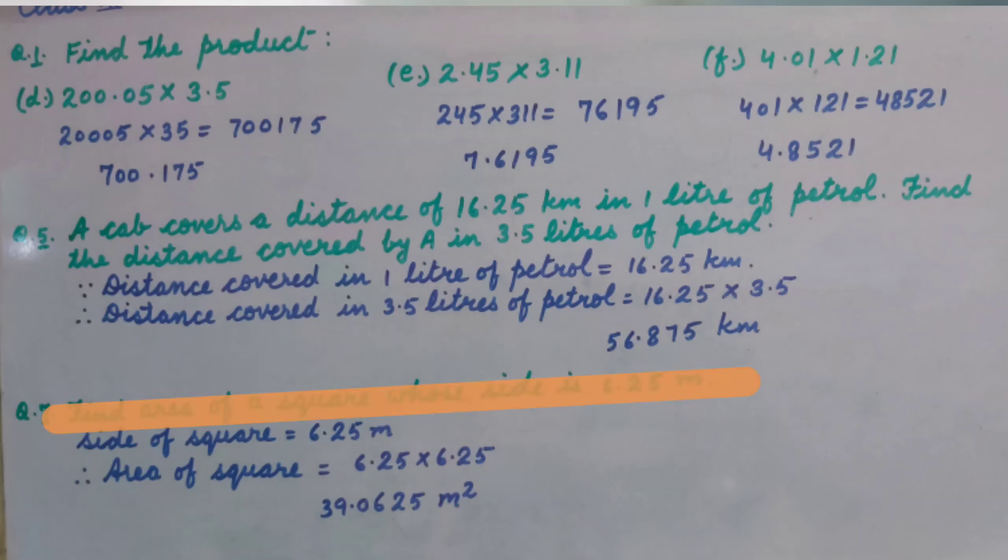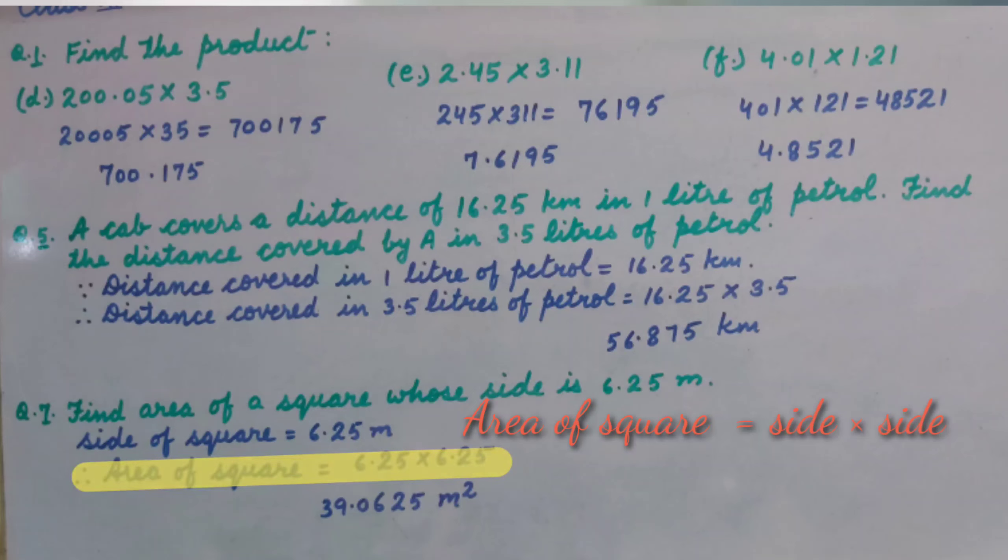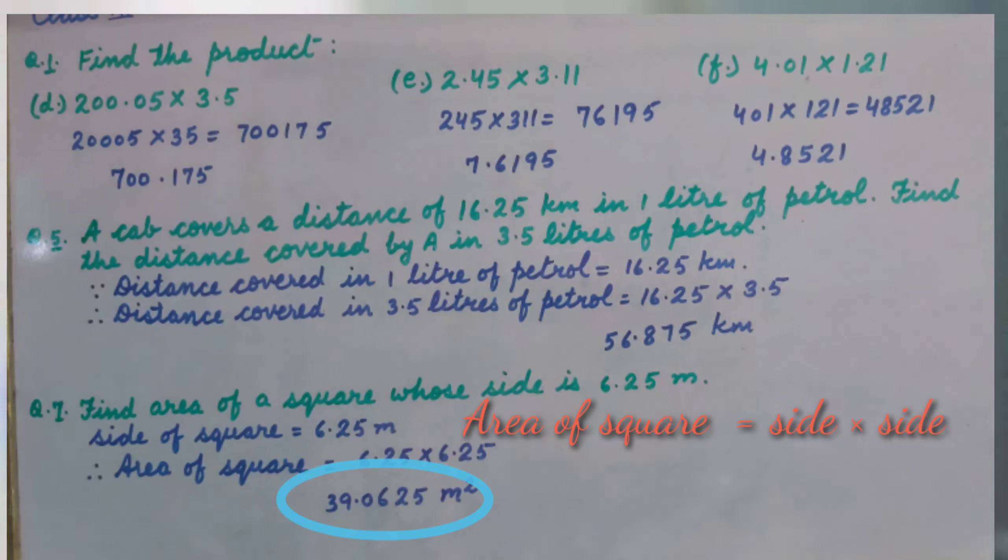Question number 7: Find the area of a square whose side is 6.25 metres. We know area of a square equals side times side, so area equals 6.25 multiplied by 6.25, which is 39.0625 square metres.